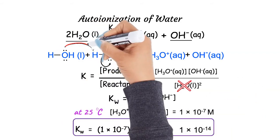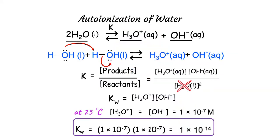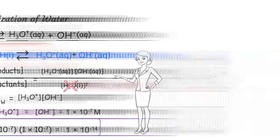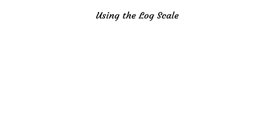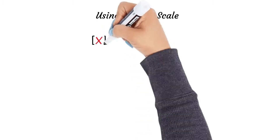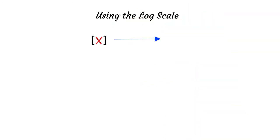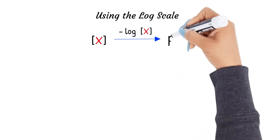The curved arrows shown are called mechanistic arrows and represent the flow of electrons during chemical reactions — how new bonds are formed and existing bonds are broken. Note that we deal with concentration values that are very small and have many decimal places. To simplify, scientists have developed the pH scale, which refers to the negative log of concentration values. For instance, for a hypothetical substance X, the p of X is the negative log of the concentration of X.